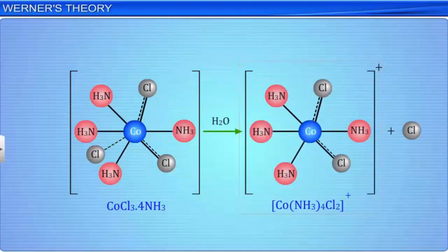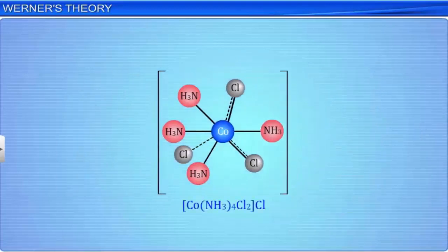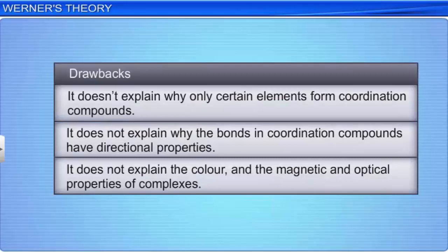Although Werner's theory successfully explains the bonding features in coordination compounds, it suffers from some drawbacks. It doesn't explain why only certain elements form coordination compounds, why the bonds in coordination compounds have directional properties, or why coordination compounds exhibit their particular color and magnetic and optical properties.